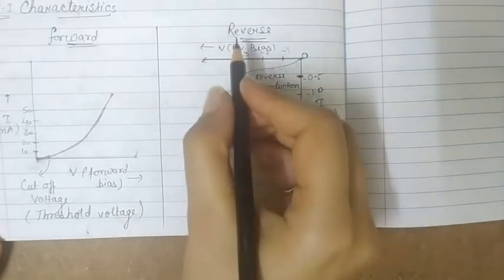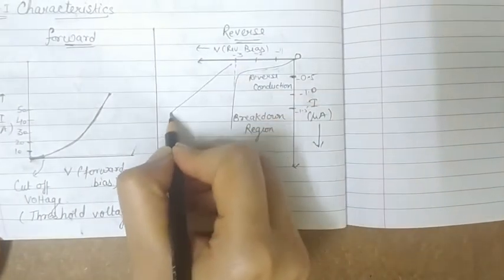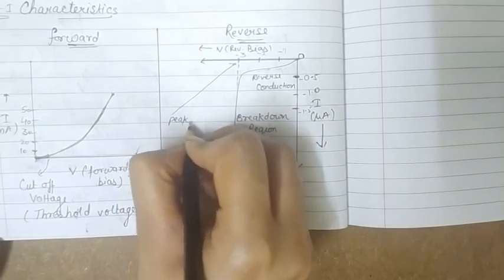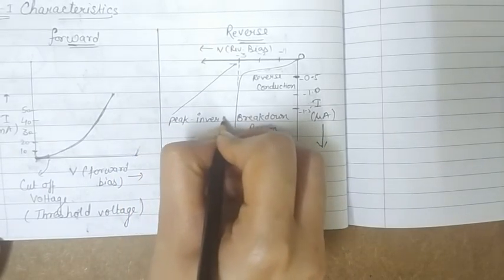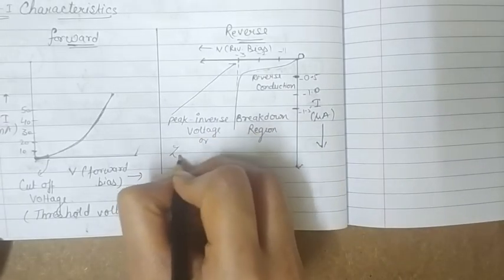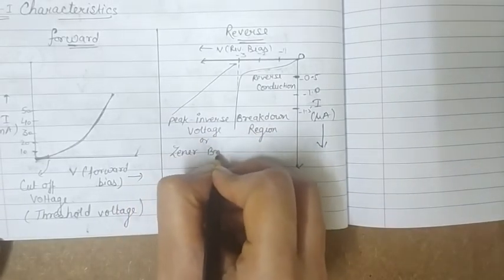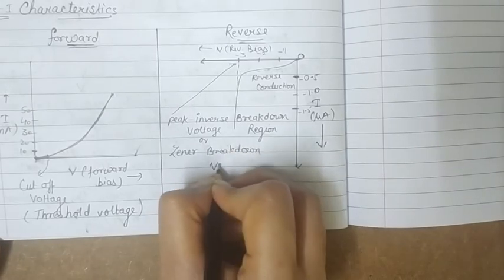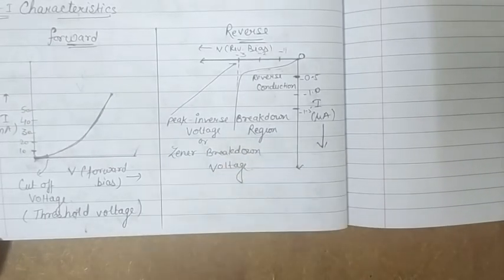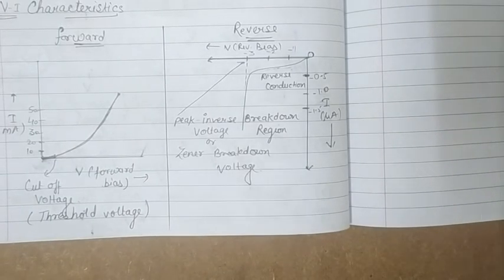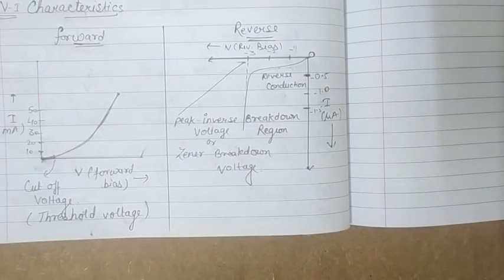The voltage at which this breakdown occurs is called the peak inverse voltage or Zener breakdown voltage. That covers the forward and reverse VI characteristics of a PN junction diode. That's all for the video — for further videos stay tuned and keep studying, thank you.